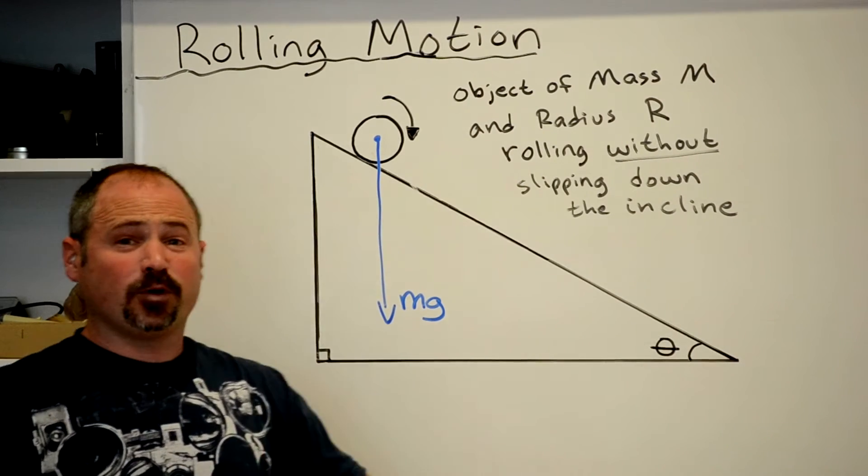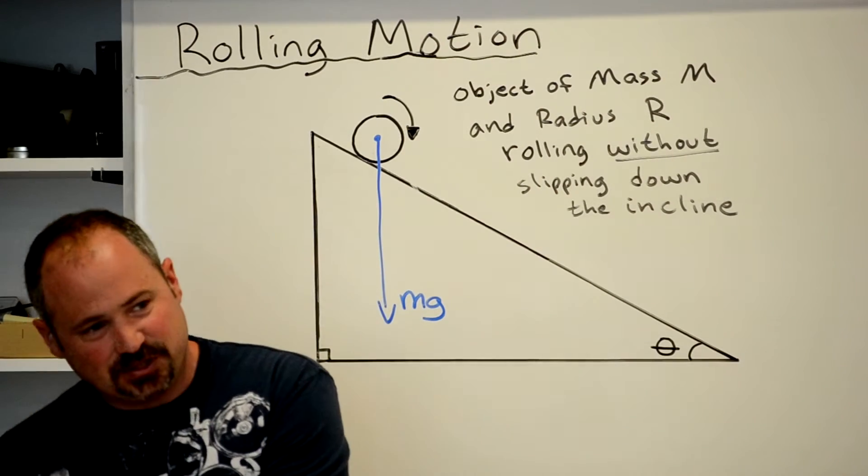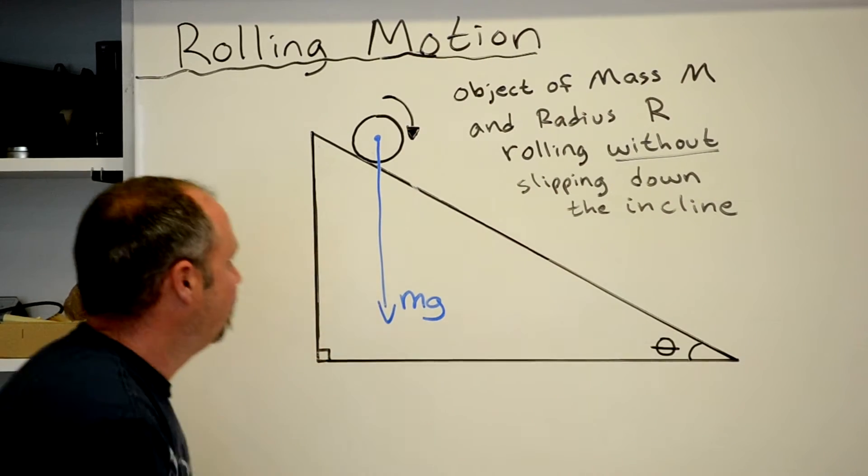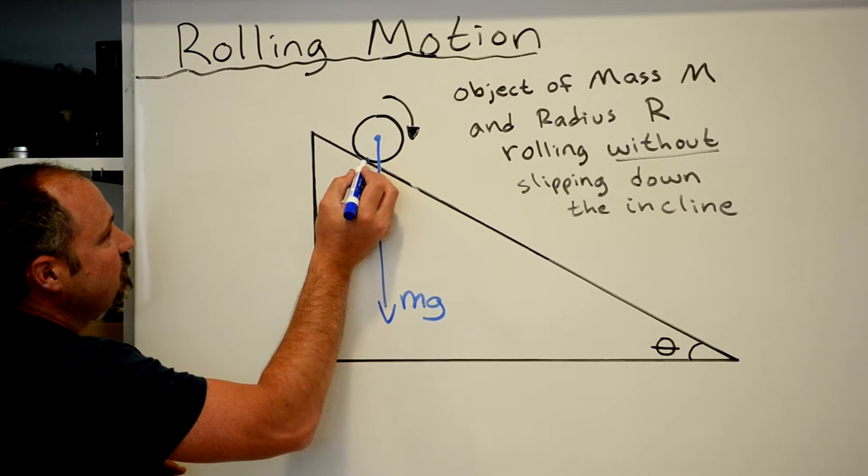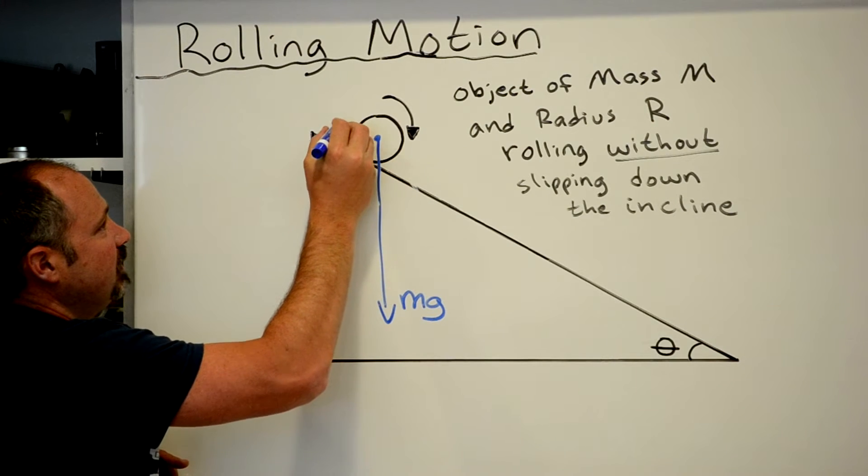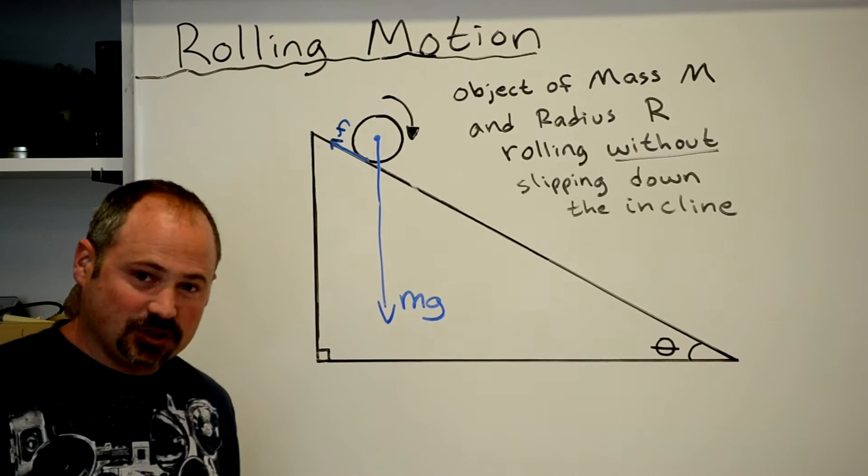It's rolling. Therefore, there has to be friction. If there was no friction, it would simply slide down the incline. Friction is always parallel to the two surfaces and in the opposite direction of motion.